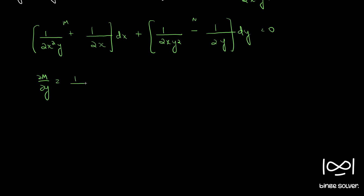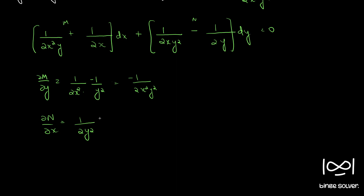∂M/∂y: differentiating 1/(2x²y) with respect to y gives minus 1/(2x²y²), and the other term 1/(2x) gives 0. So ∂M/∂y = -1/(2x²y²). Similarly, ∂N/∂x: differentiating 1/(2y) times 1/x gives minus 1/(2x²y²), and the other term goes to 0. So ∂M/∂y = ∂N/∂x, therefore the differential equation is now exact.